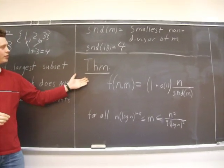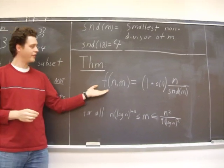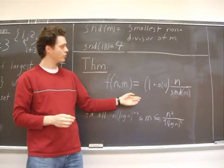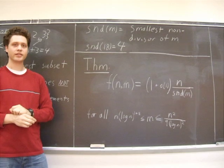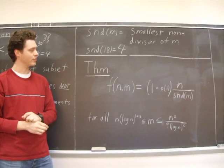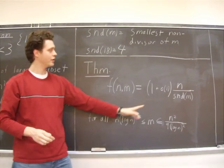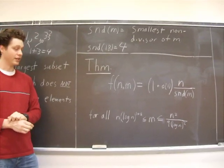The theorem we prove is as follows: f(n,m) is equal to (1 plus little o of 1) times n divided by the smallest non-divisor of m. Here, little o of 1 goes to 0 as n and m go to infinity.